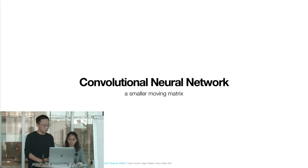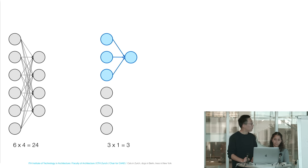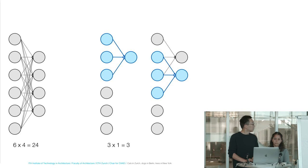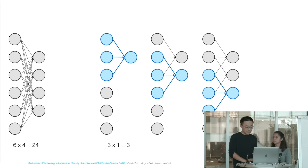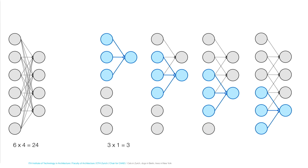For example, with a six-dimensional input vector and a four-dimensional output, a full matrix needs 6×4 = 24 parameters. If we replace it with a smaller 3×1 matrix (the kernel), we get one output from the first three elements, then slide it one step to get another output, repeating until we have a four-dimensional vector — reducing parameters from 24 to 3. This action of moving the matrix is called convolution, the matrix itself is called the kernel, and this setup is called a convolutional neural network.